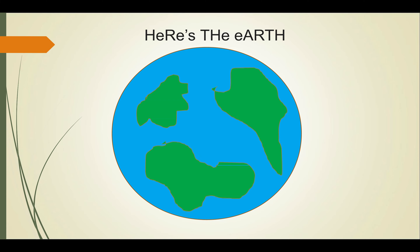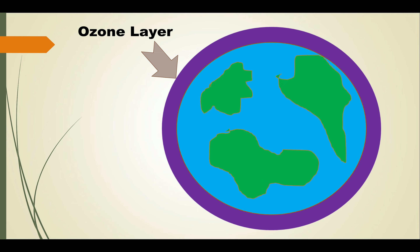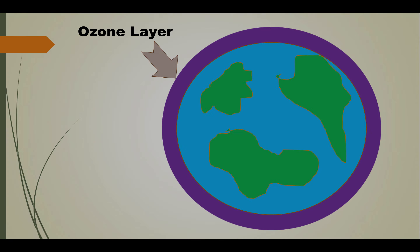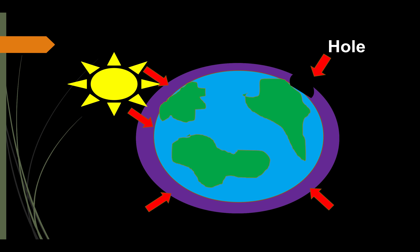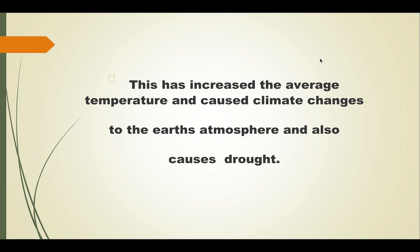There is an ozone layer around the earth, and when this ozone layer is affected — for example, when a hole appears in it — global warming results. This has increased average temperatures and caused climate changes in the earth's atmosphere, which also causes drought conditions.